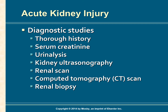Urinalysis is an important diagnostic test; urine osmolality, sodium content, specific gravity, and urine sediment — hematuria, pyuria, and crystals — may be assessed. Kidney ultrasonography is often the first imaging test done because it avoids nephrotoxic contrast agents. A renal scan assesses kidney blood flow, tubular function, and the collecting system. A CT scan can identify lesions, masses, obstructions, and vascular anomalies. Renal biopsy is considered the best method for confirming intrarenal causes of AKI.